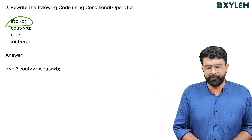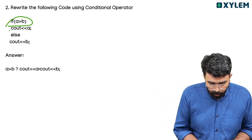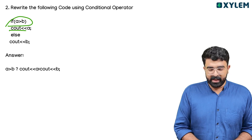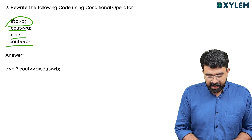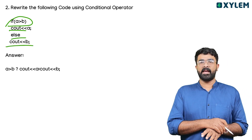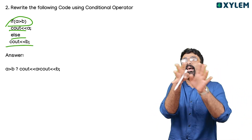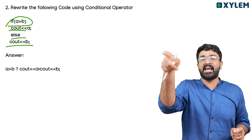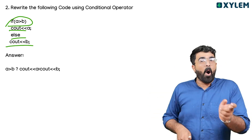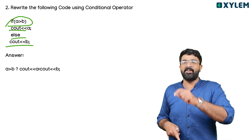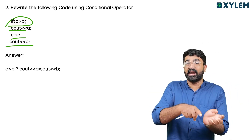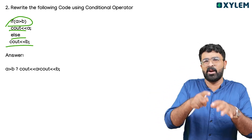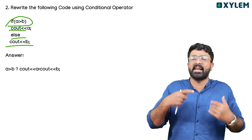If A is greater, cout A. Else, cout B. I will convert this using the conditional operator. I will rewrite that.